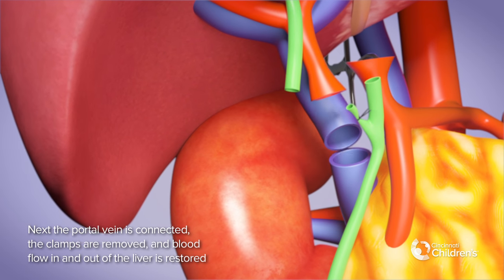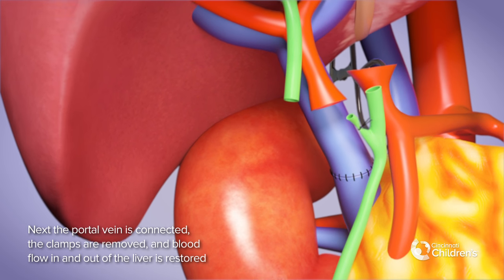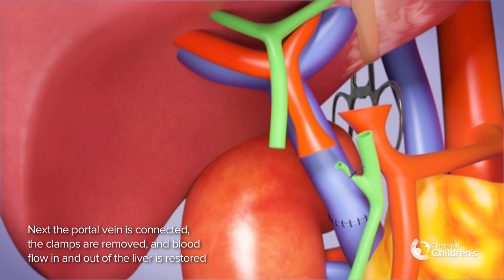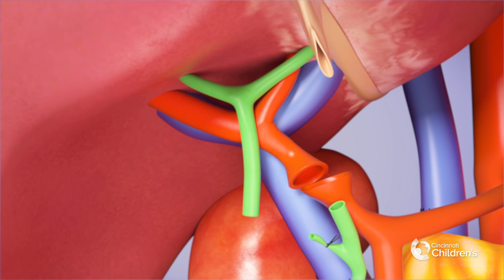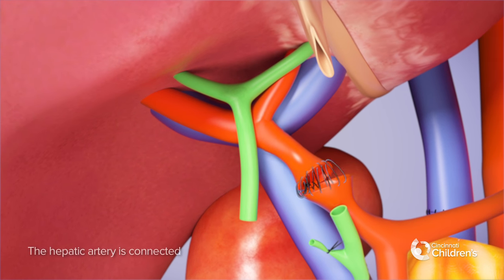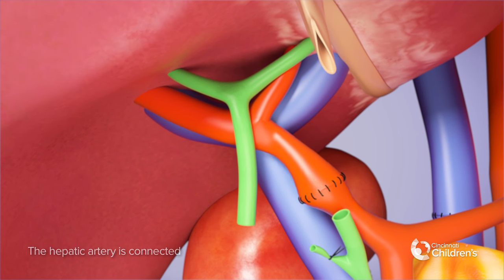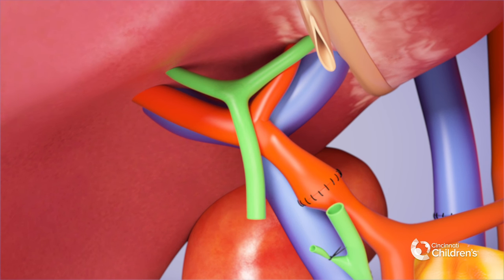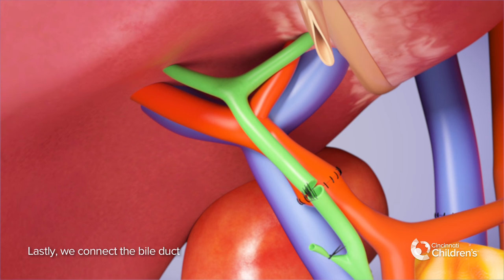Next, the portal vein is connected, the clamps are removed, and blood flow in and out of the liver is restored. The hepatic artery is connected. Lastly, we connect the bile duct.